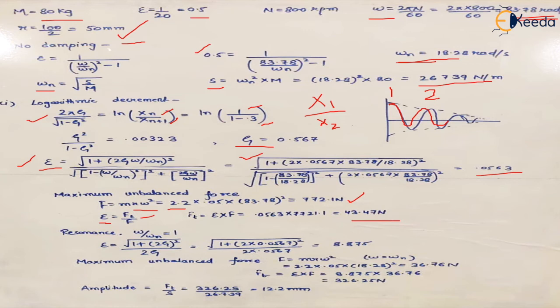The transmitted force comes out to be 43.47 N. For the resonance condition, omega upon omega_N equals 1. The formula for epsilon at resonance is the square root of (1 + (2ζ)²) upon 2ζ. The damping factor zeta is 0.0567, and we place these values to find the value of epsilon at resonance.